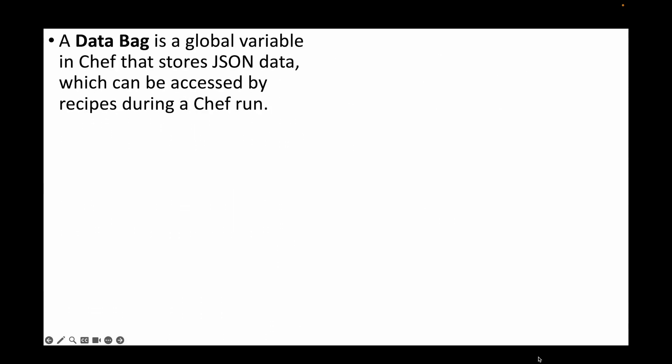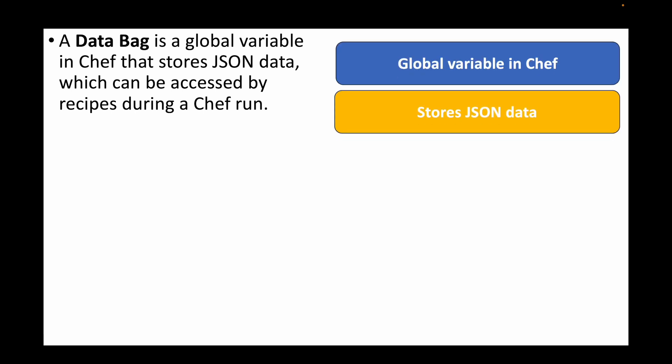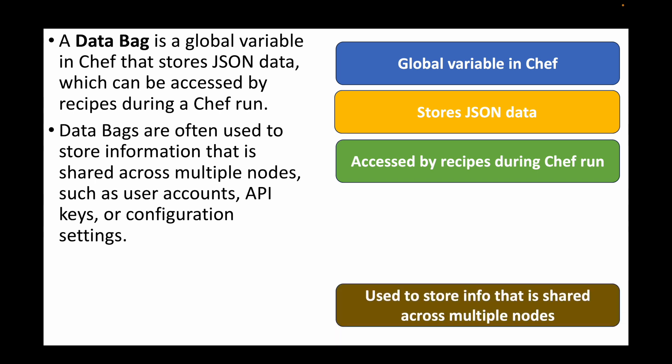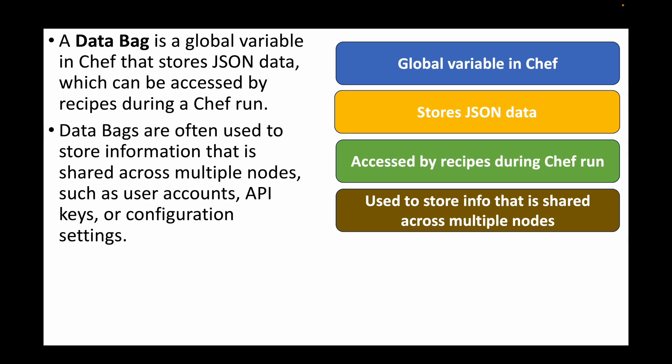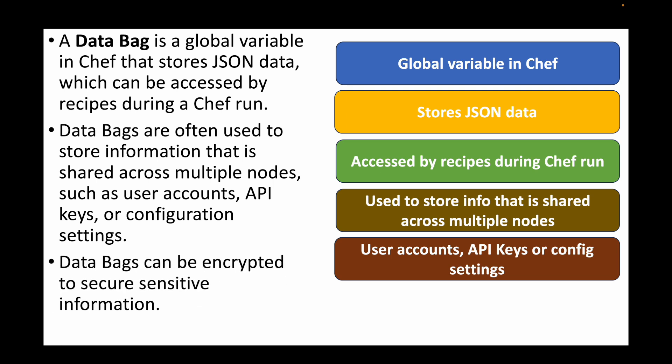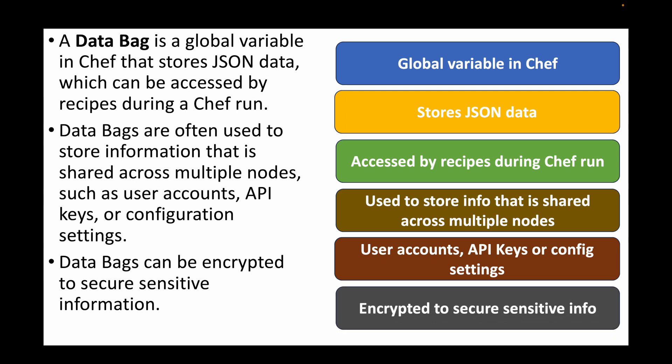The next question is: what is a data bag in Chef? A data bag is a global variable in Chef that stores JSON data which can be accessed by recipes during a Chef run. It's like a variable where we store data and call it within cookbooks when running recipes. Data bags are often used to store information shared across multiple nodes, such as user account information, API keys, or configuration settings — more like sensitive data. Data bags can be encrypted to secure sensitive information.